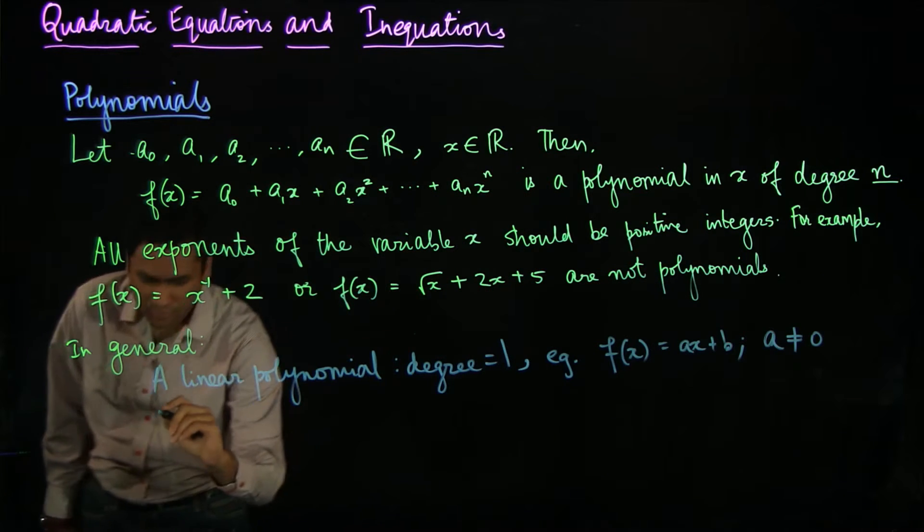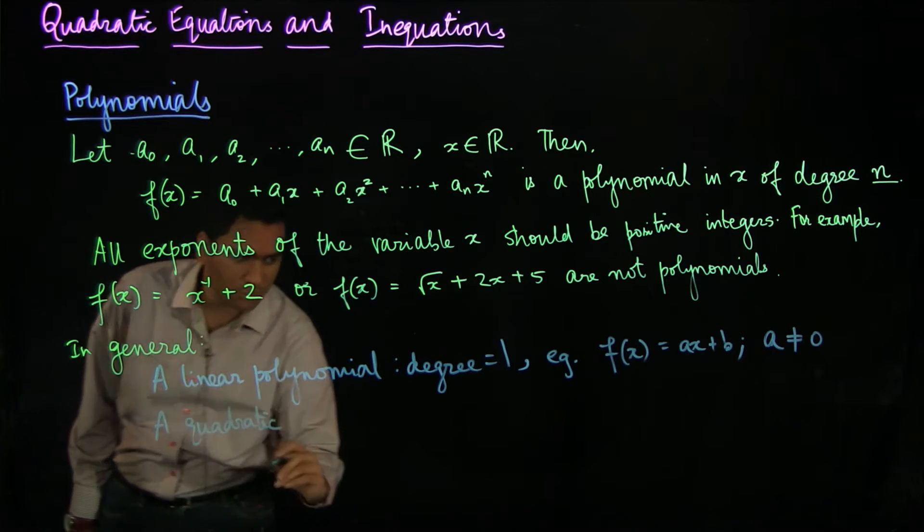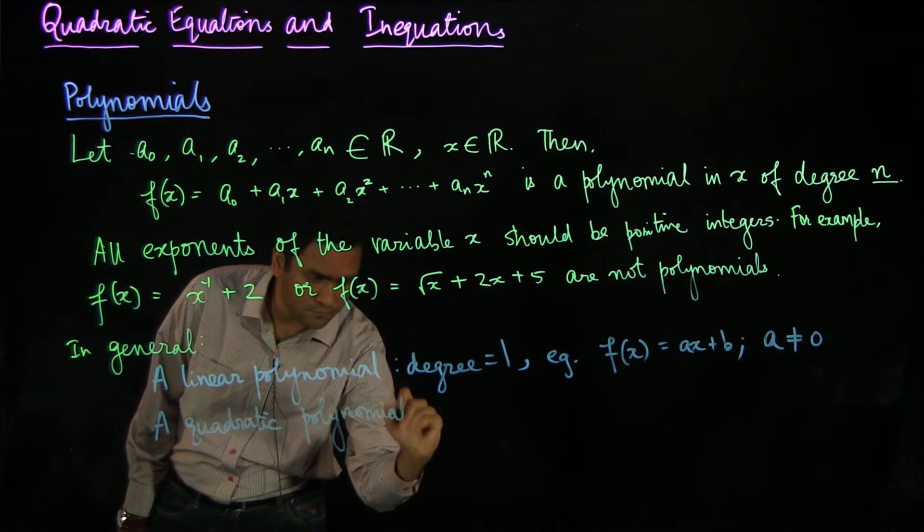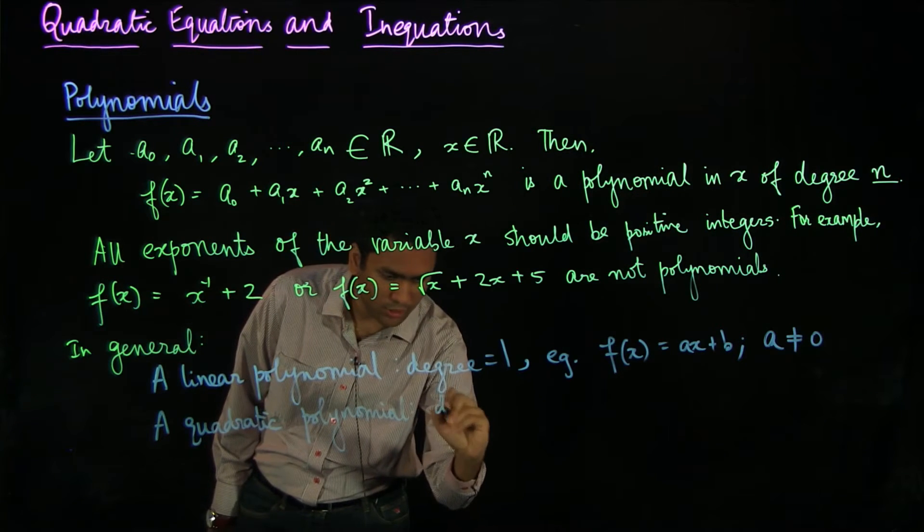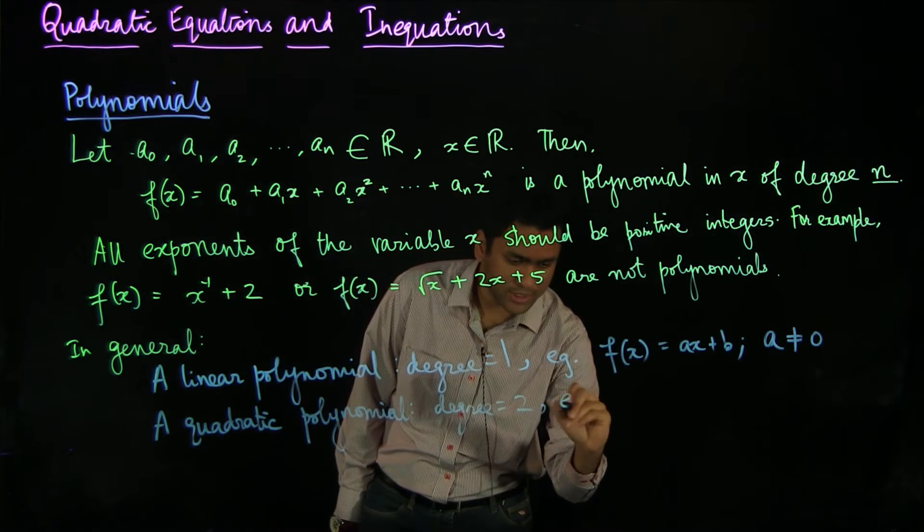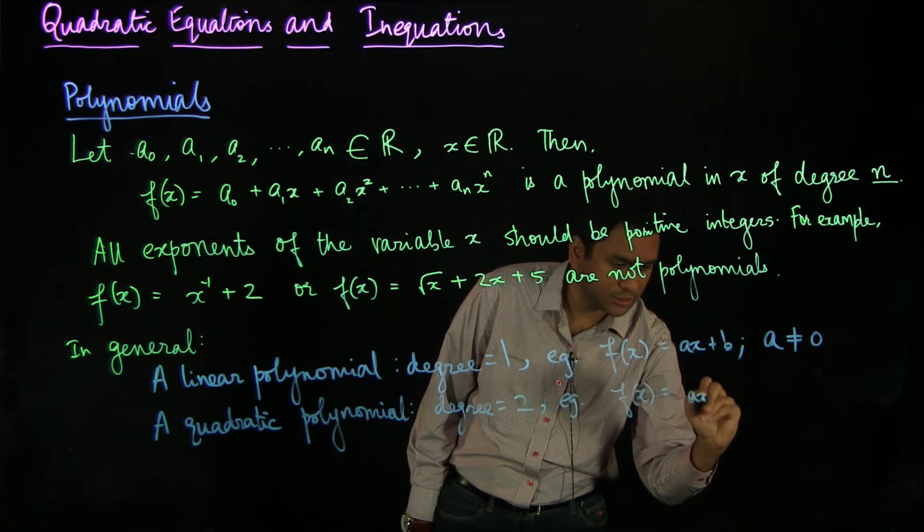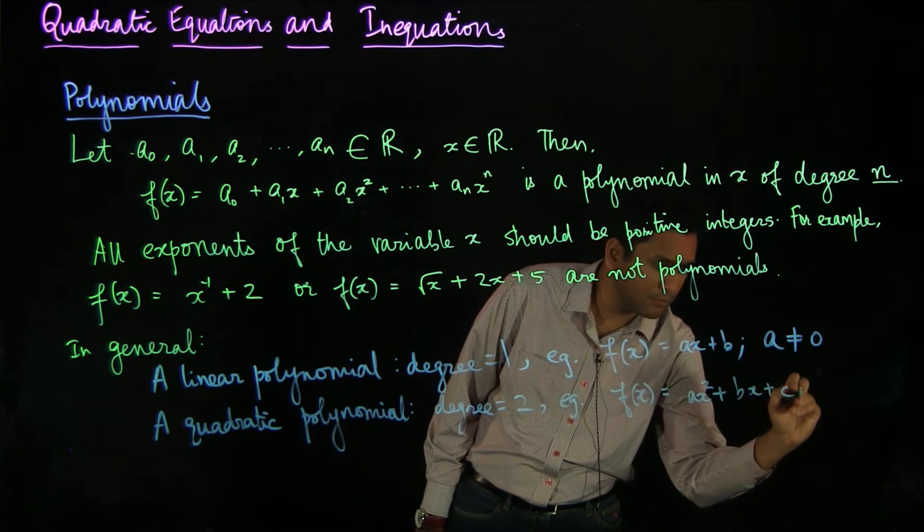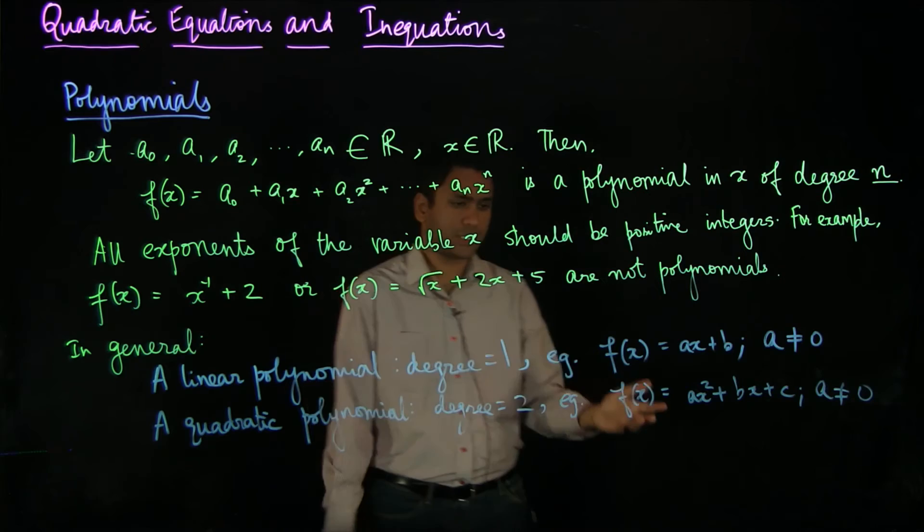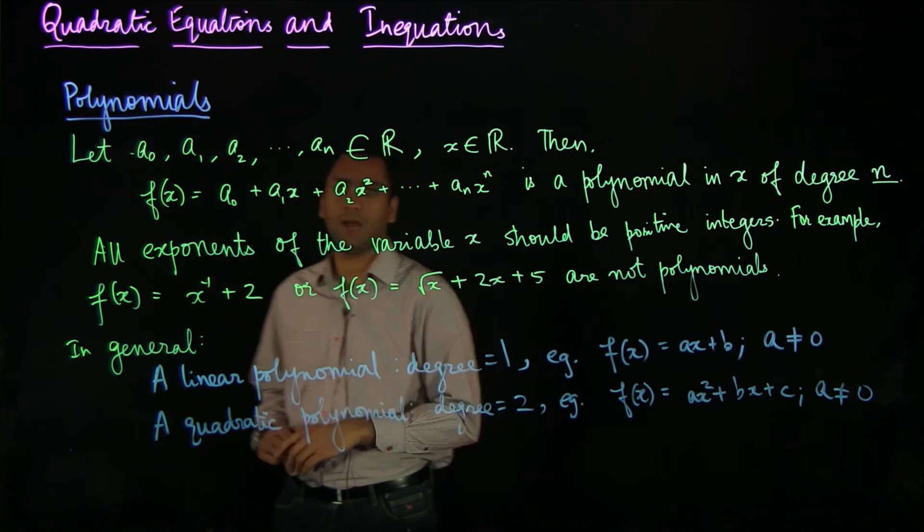Similarly, we can have a quadratic polynomial. A quadratic polynomial is one whose degree is 2. f(x) can be ax squared plus bx plus c. Of course, here your a cannot be 0 because if it were 0, then this would become a linear polynomial. You wouldn't be having a quadratic polynomial.